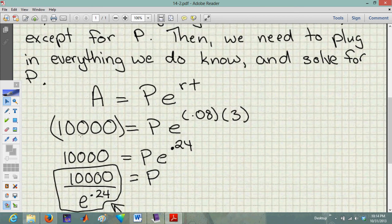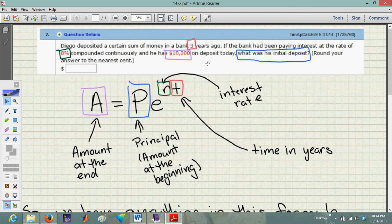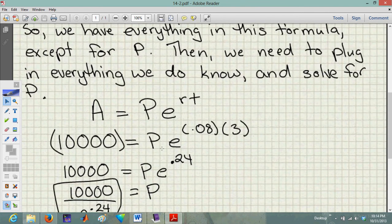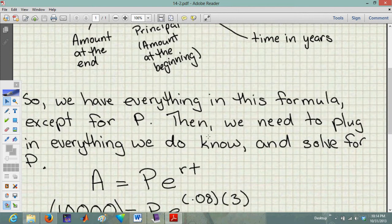We knew that A was ten thousand - that was the ten thousand dollars he has on deposit right now. That's the ending amount. P, we don't know. E is always going to be the same, it's that same E. We had our rate here.